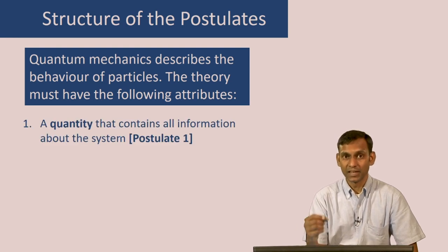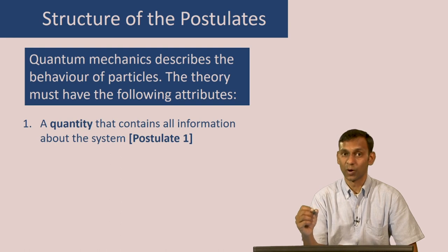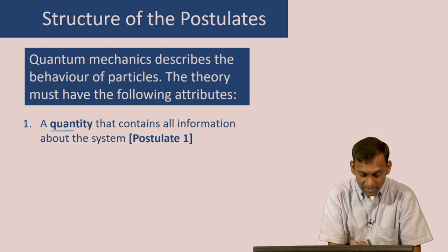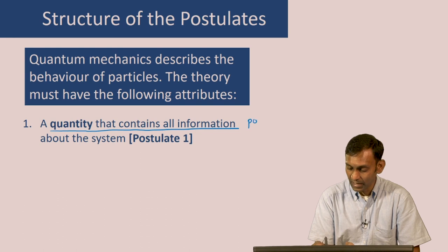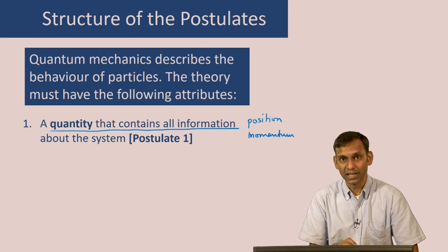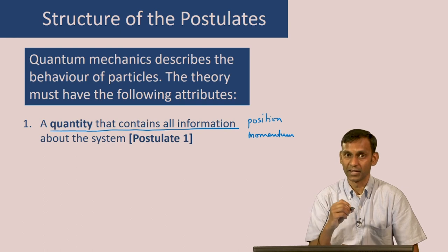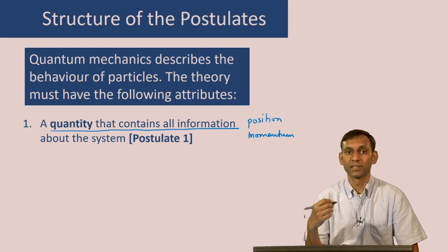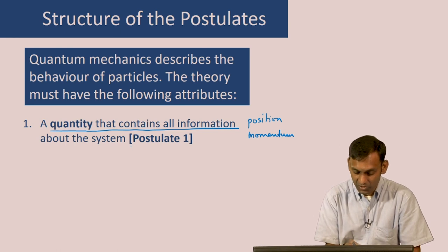The first thing that a theory describing the motion of particles should have is a quantity which contains all information about the system. In classical mechanics, this quantity is the position and the momenta of the different particles. In quantum mechanics, there is a different quantity, because the position and momenta of a particle may not be well defined — there would be a distribution. This different quantity that describes the state of the system will be discussed in postulate 1.